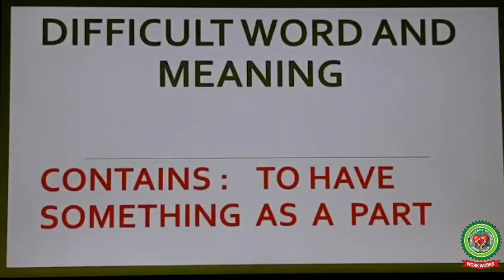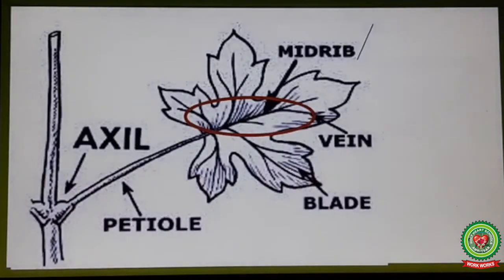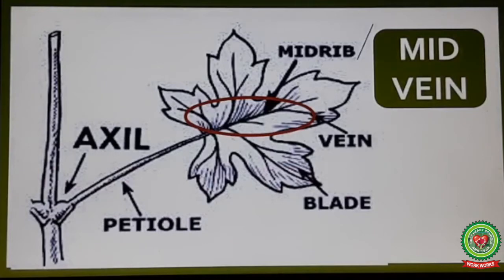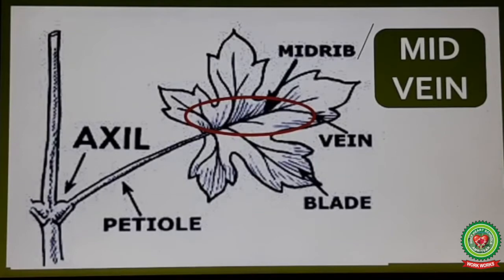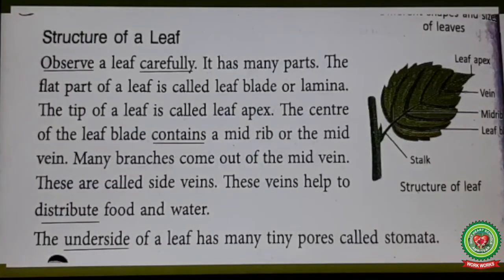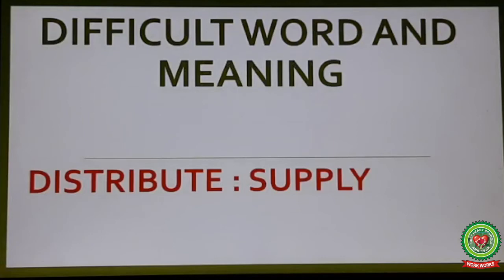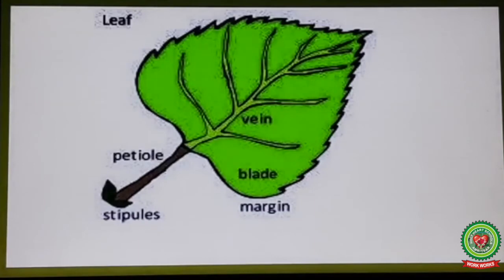Underline the word 'contains' and write its meaning: to have something as a part. Look at this picture — this highlighted part is called the midrib, and another name for midrib is mid-wing. Many branches come out of the mid-wing; these are called side veins. These veins help to distribute — underline 'distribute' and write its meaning: supply — food and water. Look at this picture; these are the side veins.